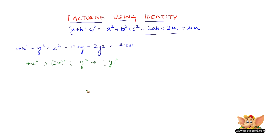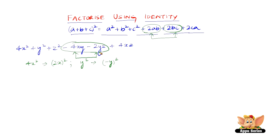Now, why are we writing y² as (-y)²? Because here y is b. We have 2ab and 2bc — these are the two terms that contain the letter y, and both of them are negative. That negative is because of y and not because of x or z. Therefore, we write y² as (-y)².